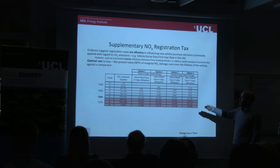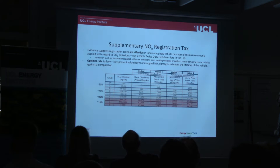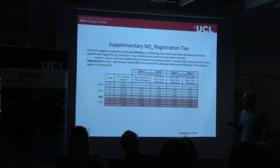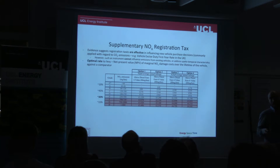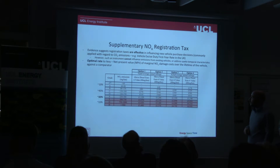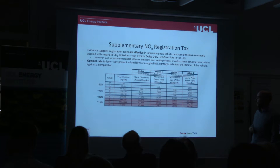Option one compares the additional damage costs of a vehicle falling into lower grades compared to a diesel car that does meet the Euro 6 regulation of 80 milligrams per kilometre. Option two does the same calculation but compares it to a petrol car with a lower limit value of 60 milligrams. These two options both assume diesel and petrol cars drive the same average annual mileage of about 8,000 miles per year. However, in fact diesel cars tend to travel roughly 12,000 miles per year versus petrol at 7,000, so options three and four repeat these calculations taking that difference into consideration.